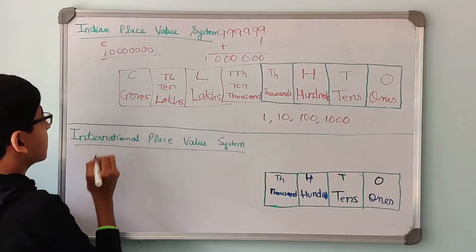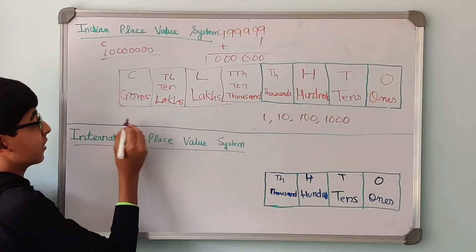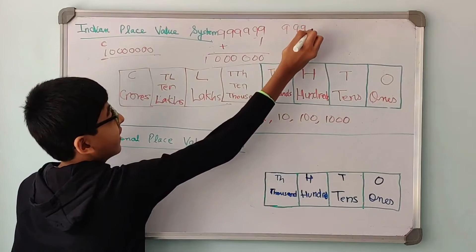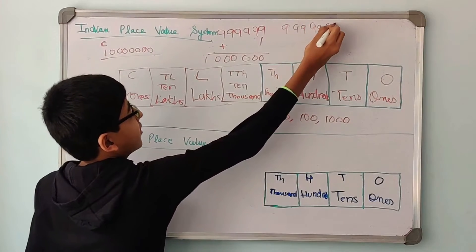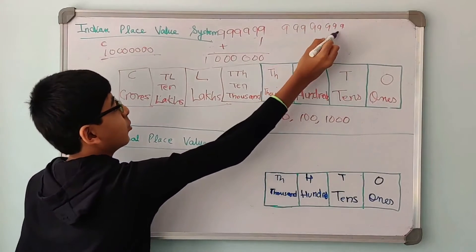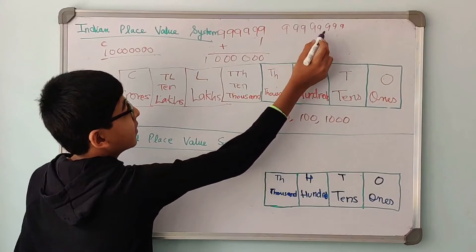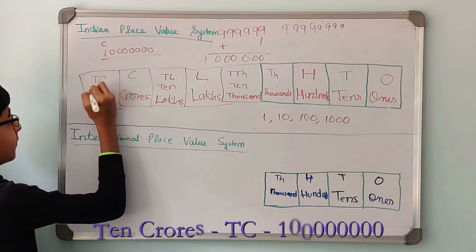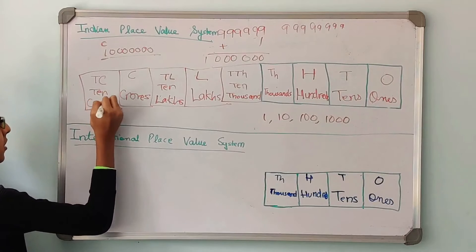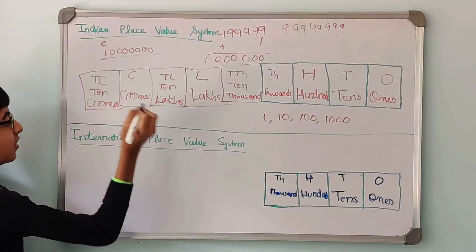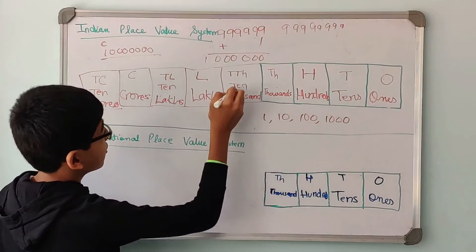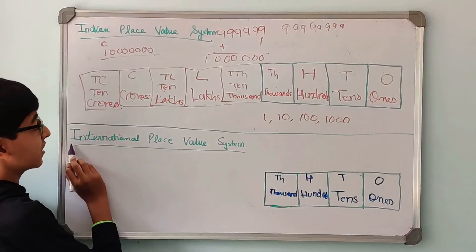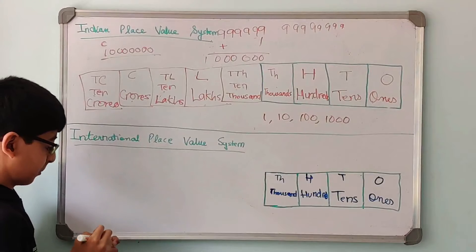It is a big number. The biggest number that comes in the Crores list is 9 crores, 99,99,999. When we add 1 to that, we get 1 followed by 8 zeros, and this is called 10 Crores. So, in our Indian place value system, the first 9 places are: 1s, 10s, 100s, 1,000s, 10,000, Lac, 10 Lac, Crores, 10 Crores.